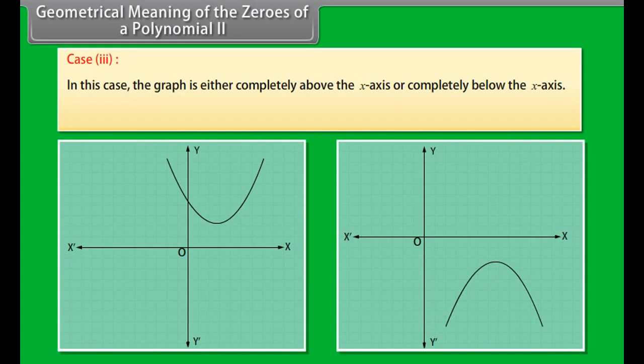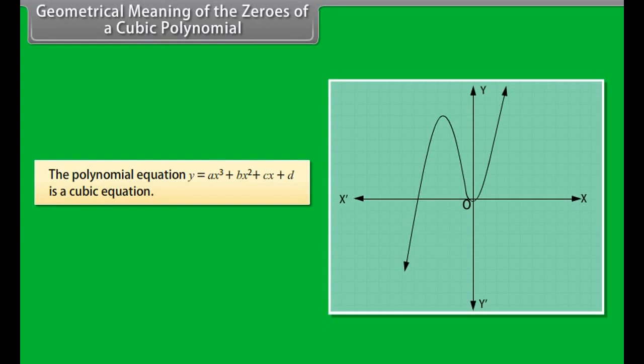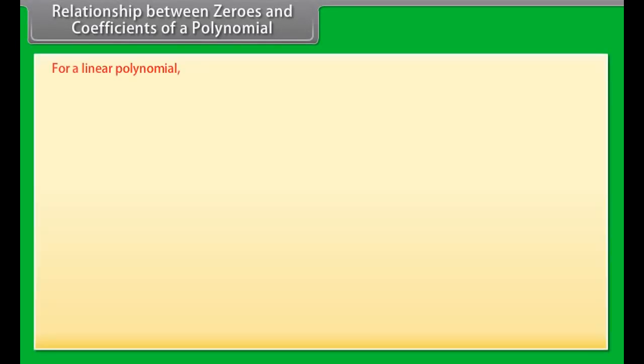Case 2: the graph cuts the x-axis at exactly one point, that is, at two coincident points. The two points A and A' of Case 1 coincide here to become one point A. Case 3: the graph is either completely above the x-axis or completely below the x-axis. It does not cut the x-axis at any point. The quadratic polynomial ax² + bx + c has no zero in this case.